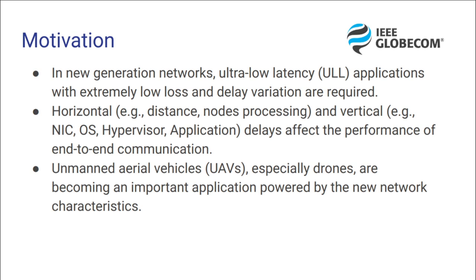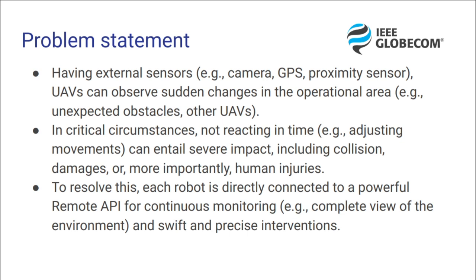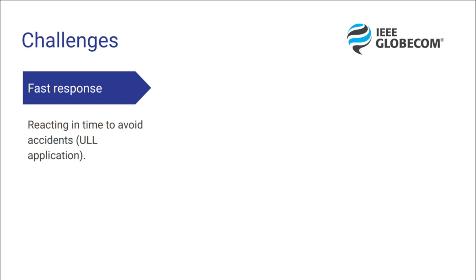Usually, UAVs have external sensors that are used to identify what is happening in the environment. Avoiding a possible collision, for instance, is crucial. To process all the information collected, the UAVs are connected to powerful remote APIs that monitor and intervene if needed. Our challenge is a fast response — we need to react in time to avoid a possible collision or an incident.